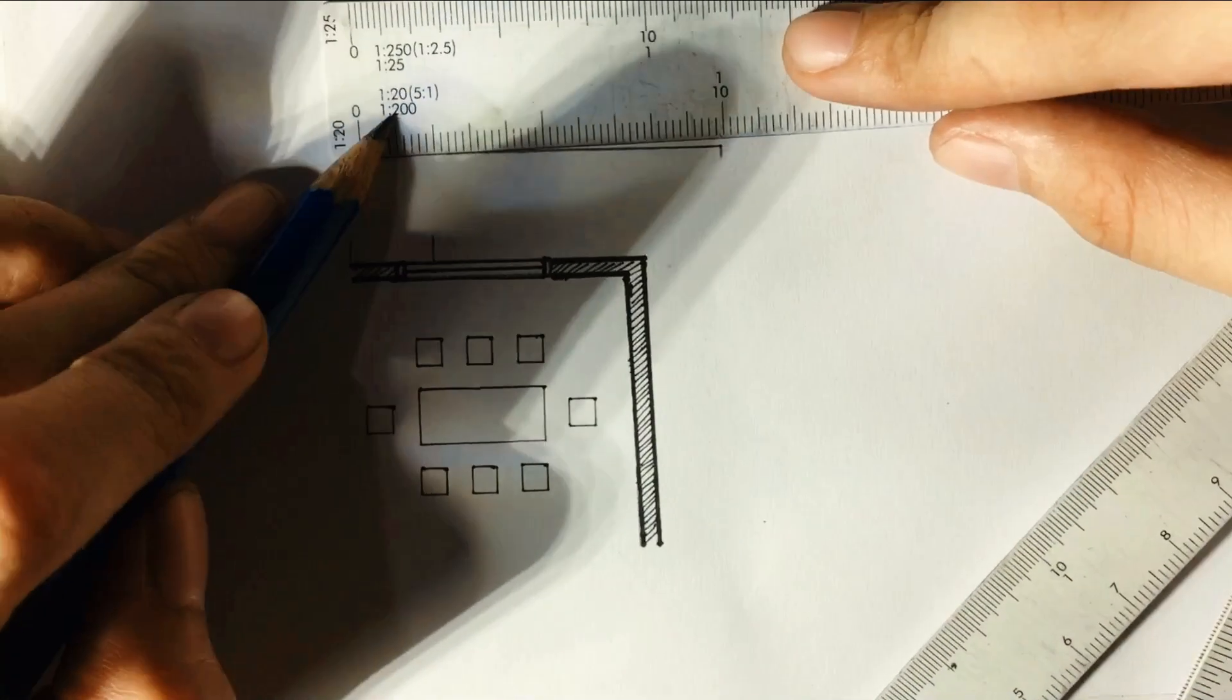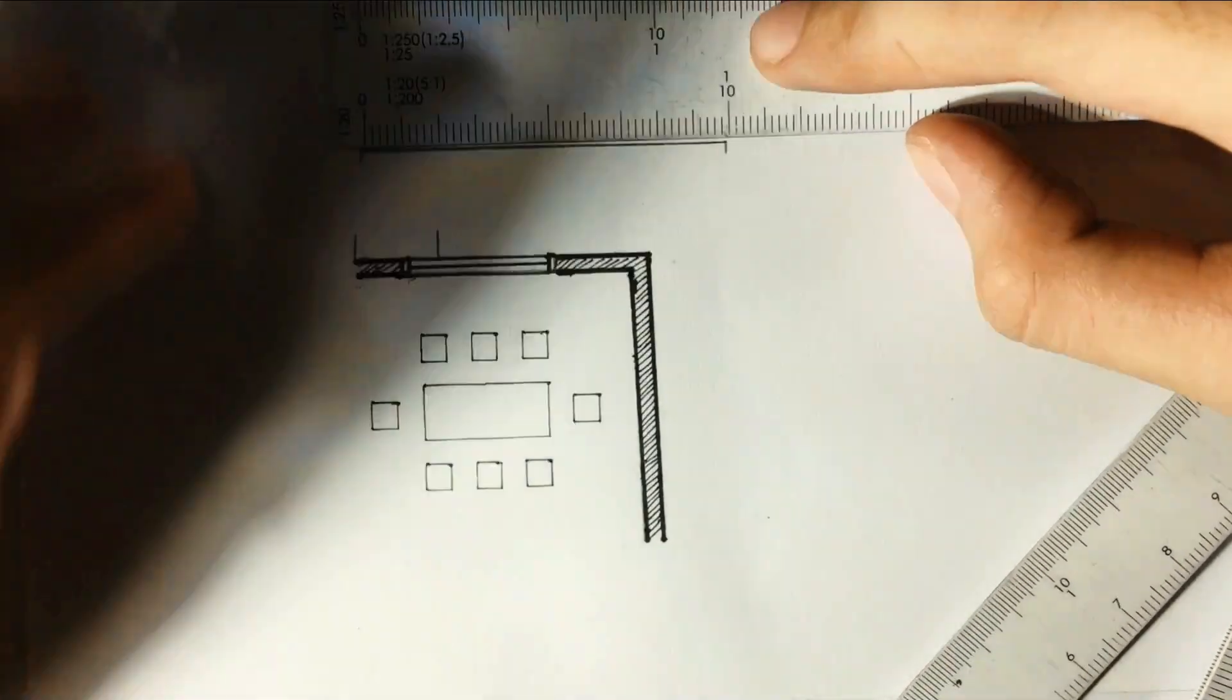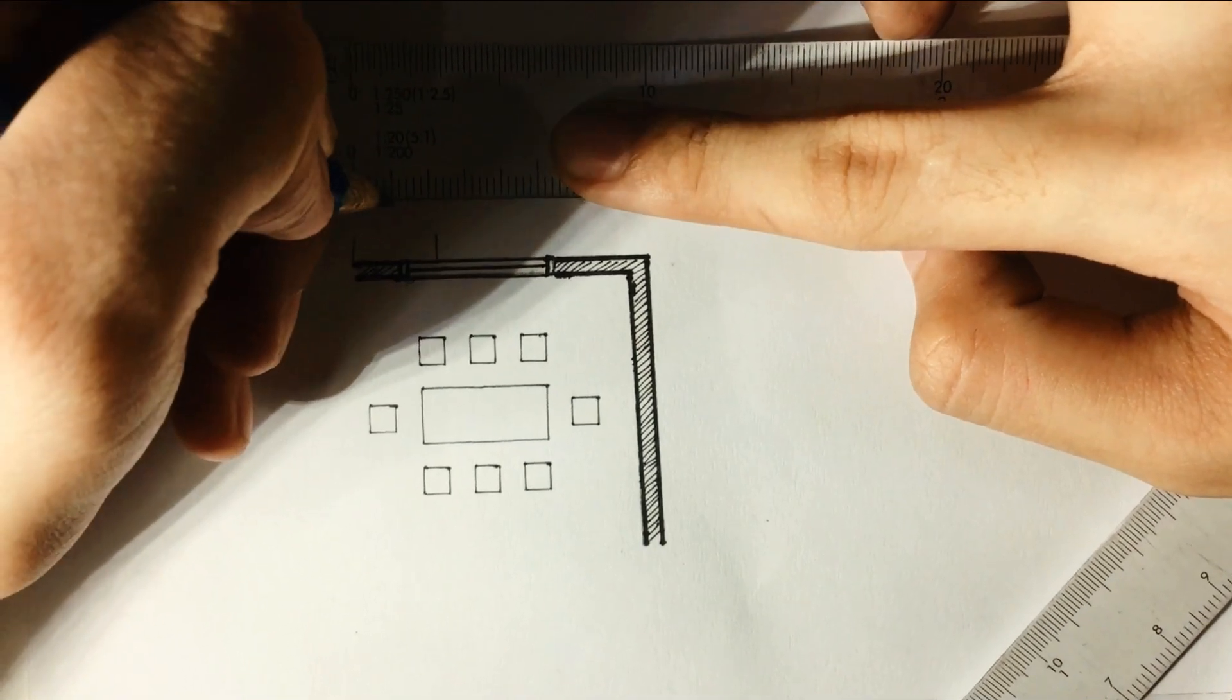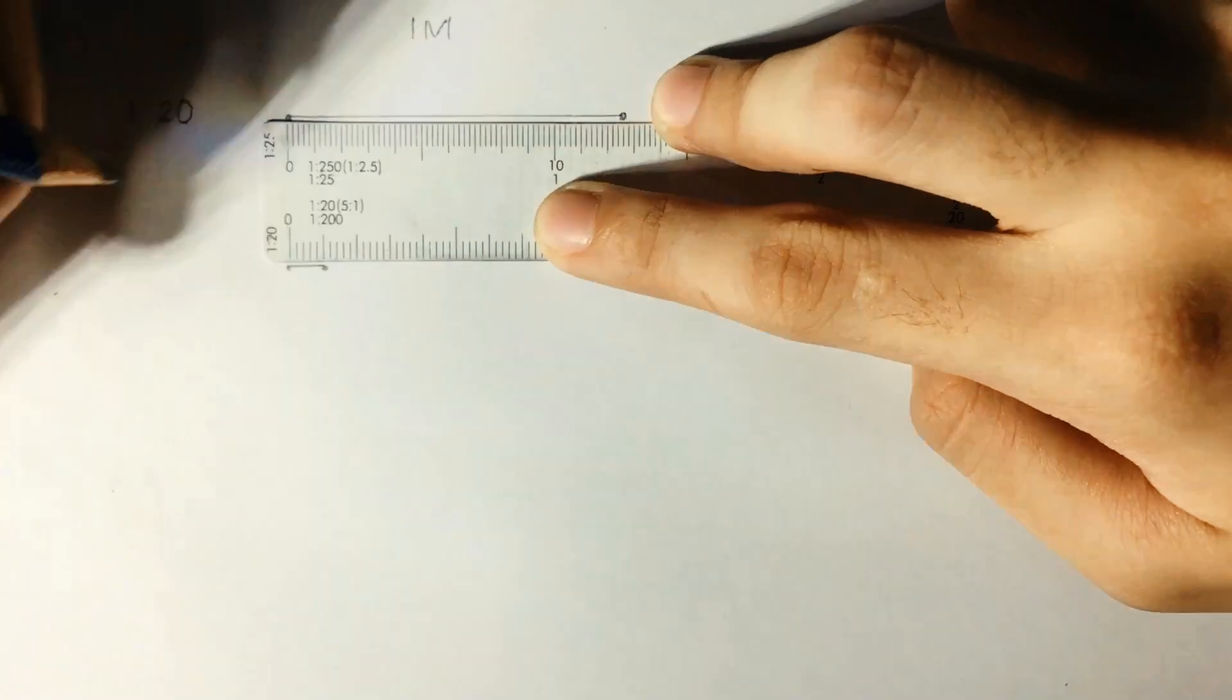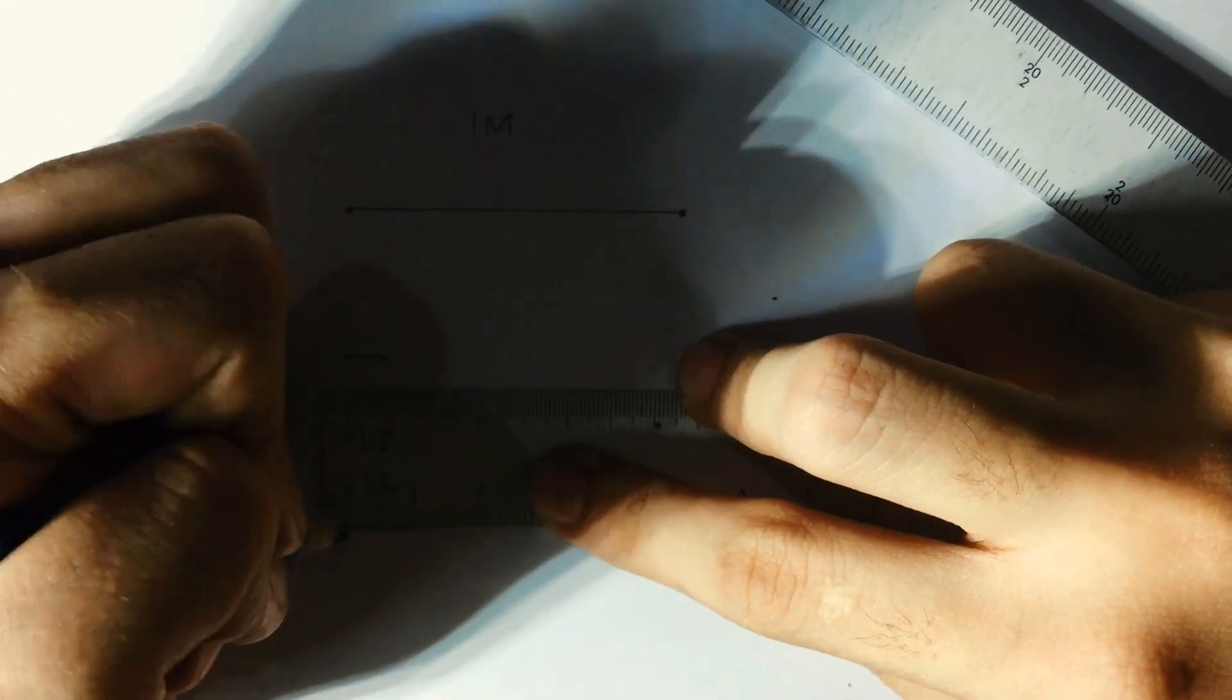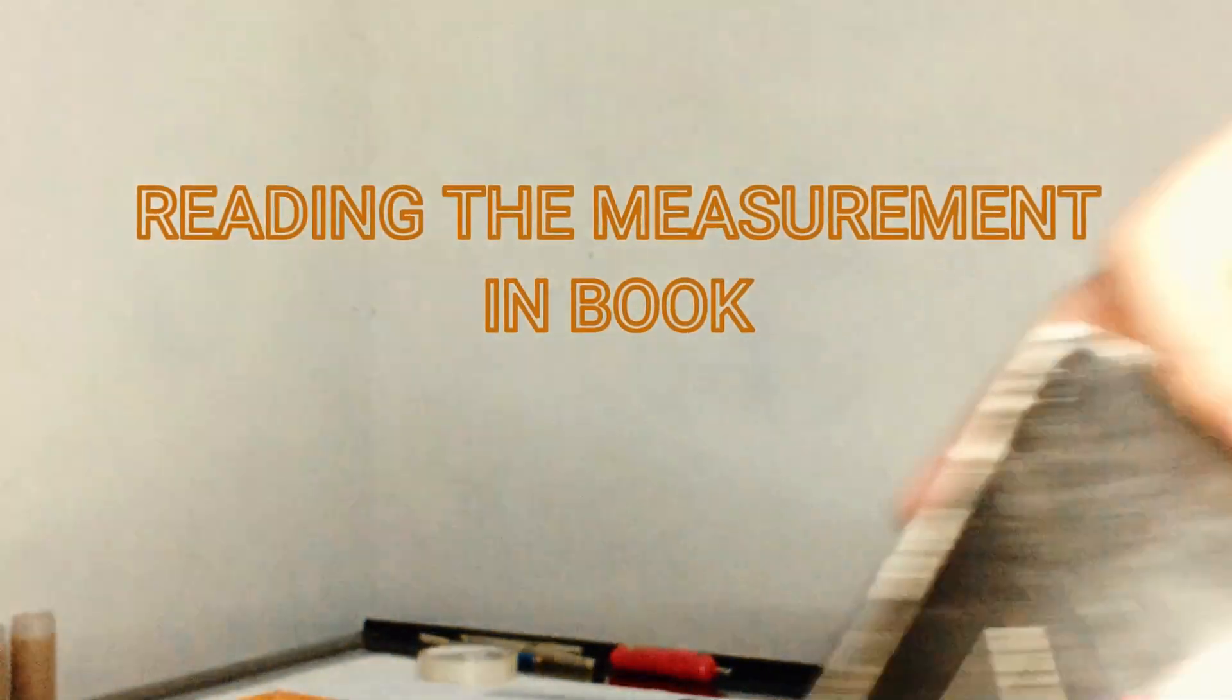When it's 1 is to 200, it means you made it 200 times smaller. So of course it's smaller because compared to 1 is to 100 earlier, your 1 meter here is only half. So this is 1 meter. See, it's really small.